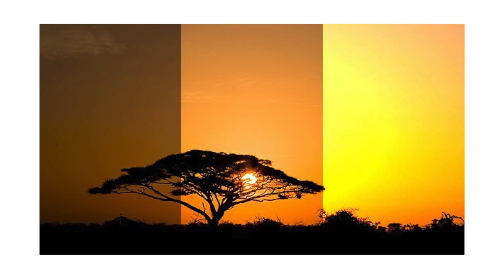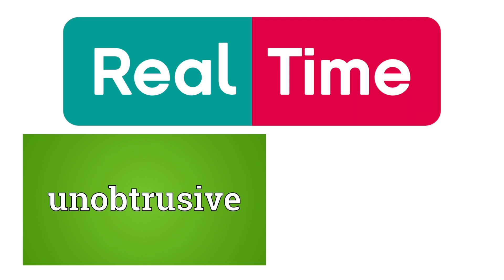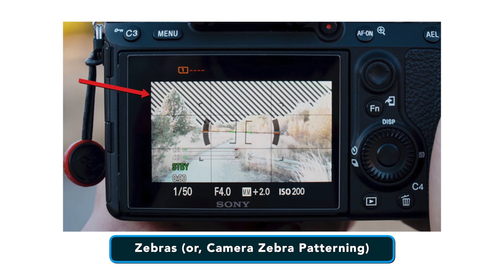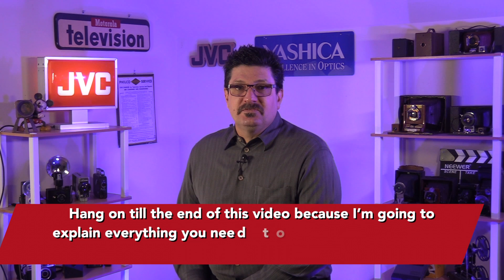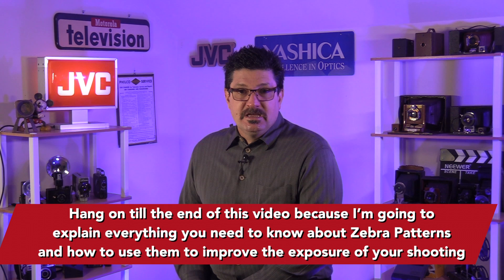Wouldn't it be nice if there was a way to check the exposure of the image or scene in real time, as unobtrusively as possible and not based purely on guessing? Well, there is. It's called the Zebras or Camera Zebra Patterning. Hang on to the end of this video because I'm going to explain everything you need to know about Zebra Patterns and how to use them to improve the exposure of your shooting.